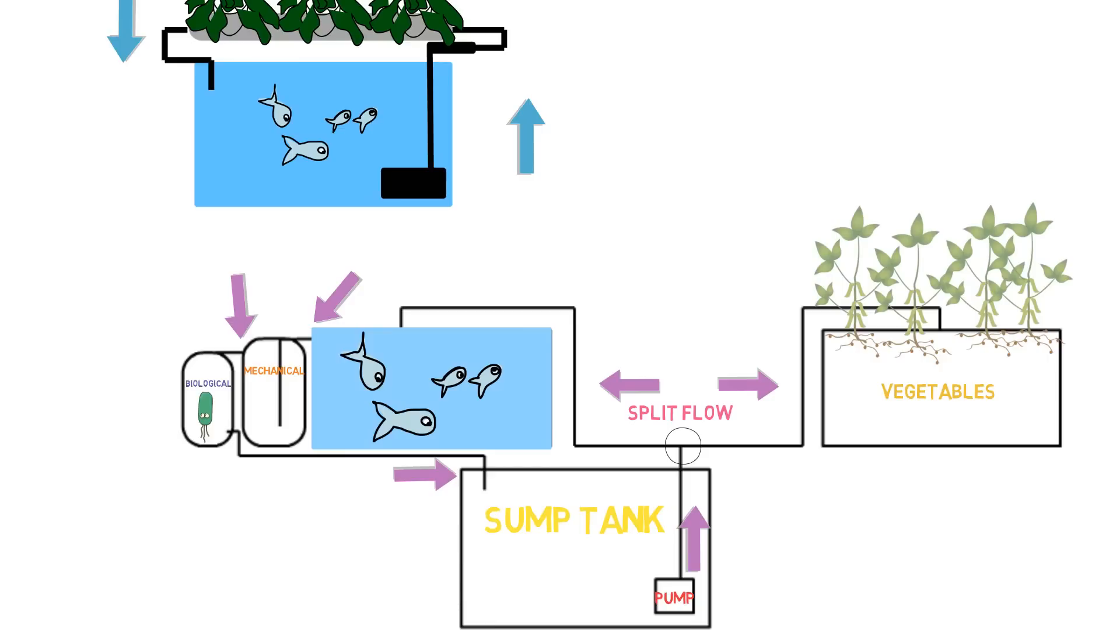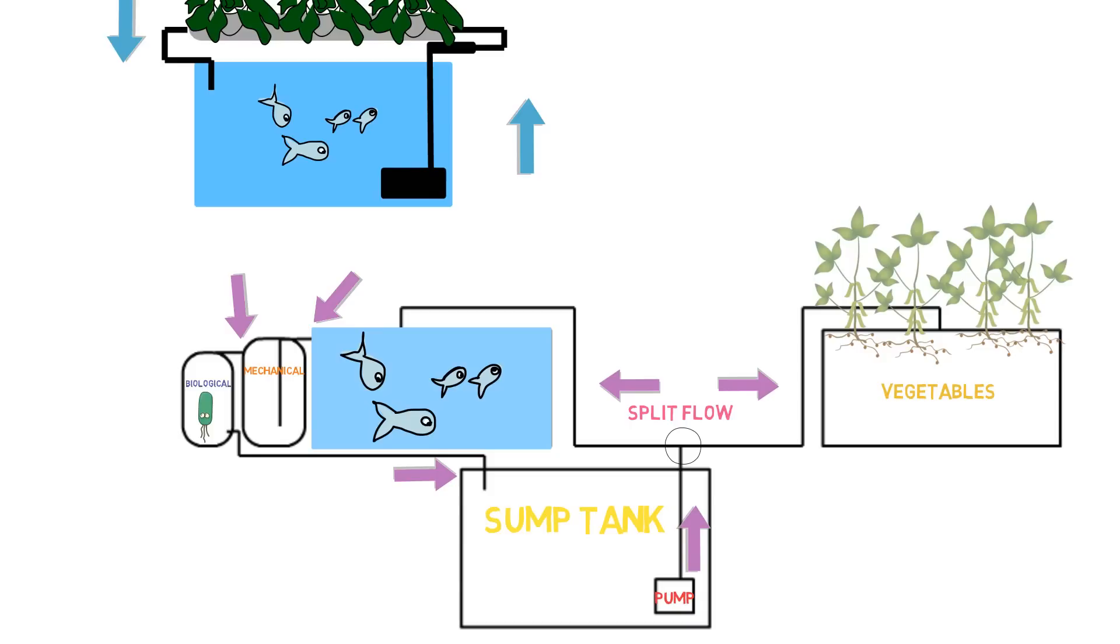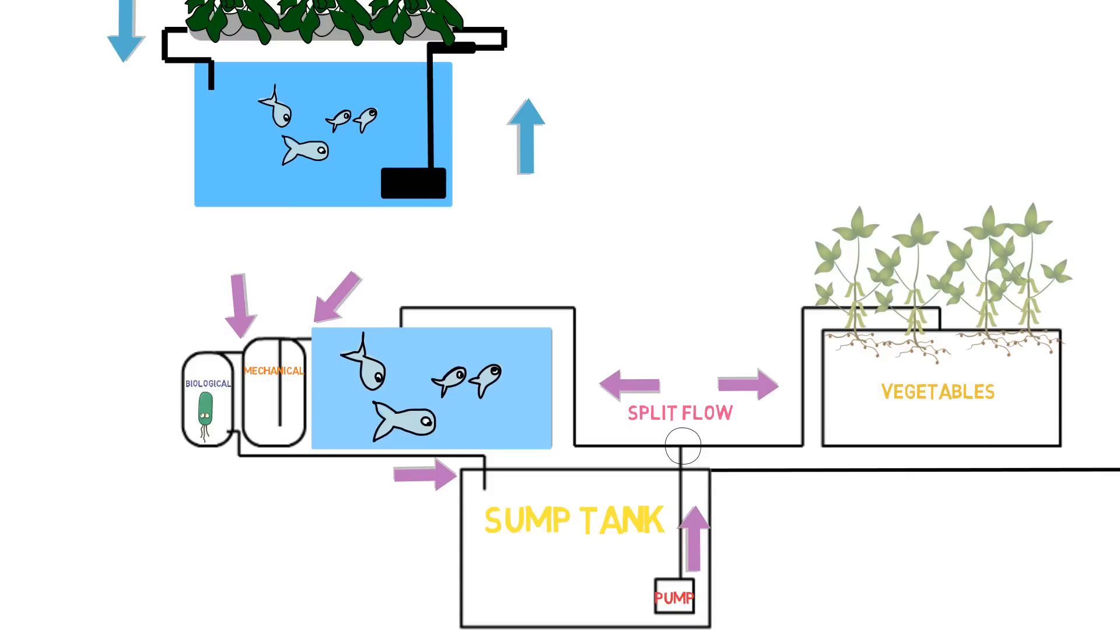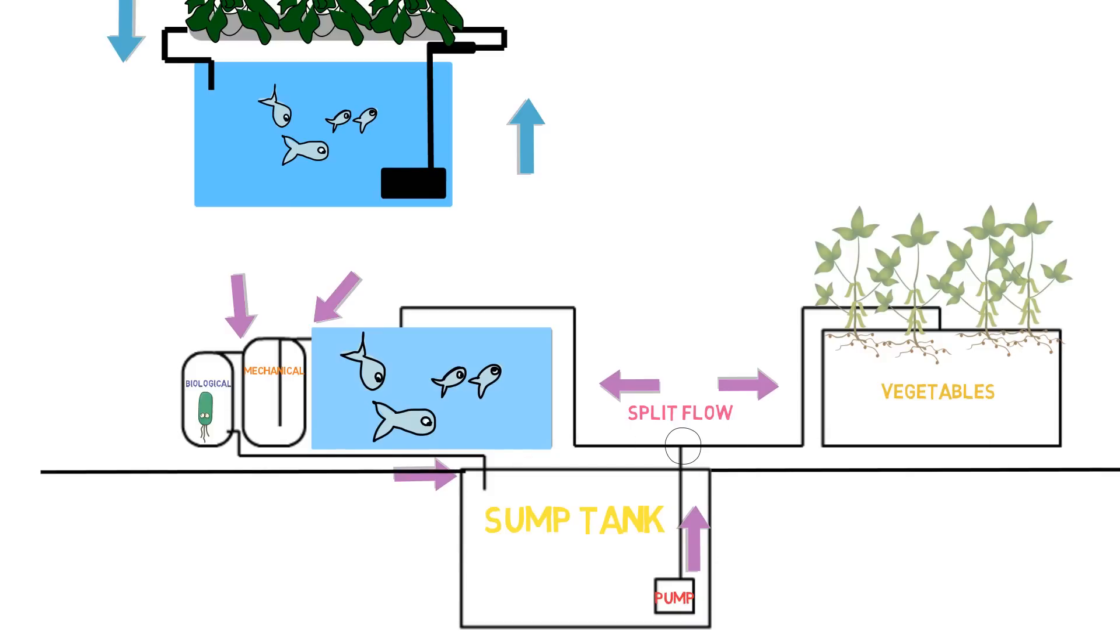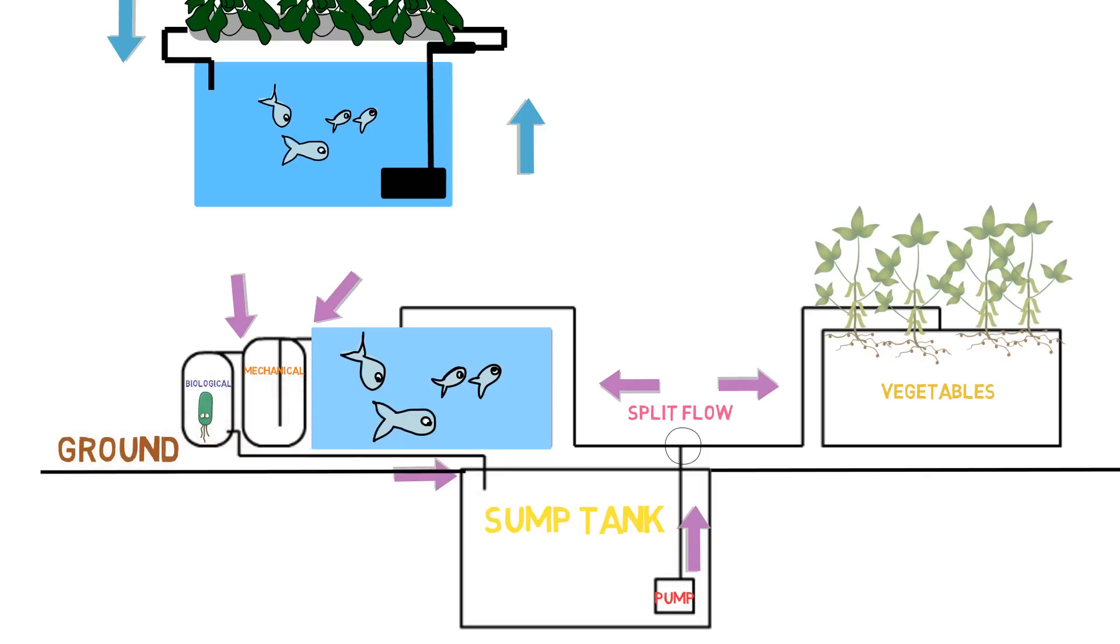One thing that I missed: the sump tank is going to be the lowest portion in your system. Optimally you would want to have it underground, under the ground level, but sometimes that's not the case. But it needs to be the lowest point inside of your system.